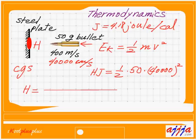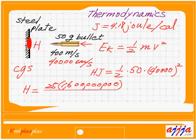That's right. Half of 50, which is 25. So 25 times - 40,000 times 40,000, which is 16 with 8 zeros. Just like this. Which is actually 1.6 billion. Then over 4.18. That's it.